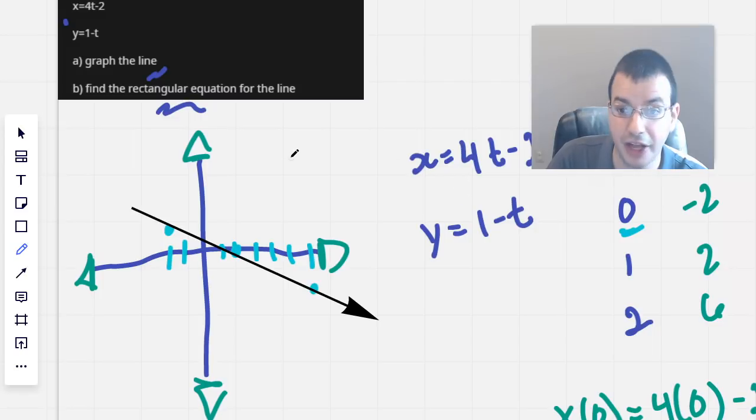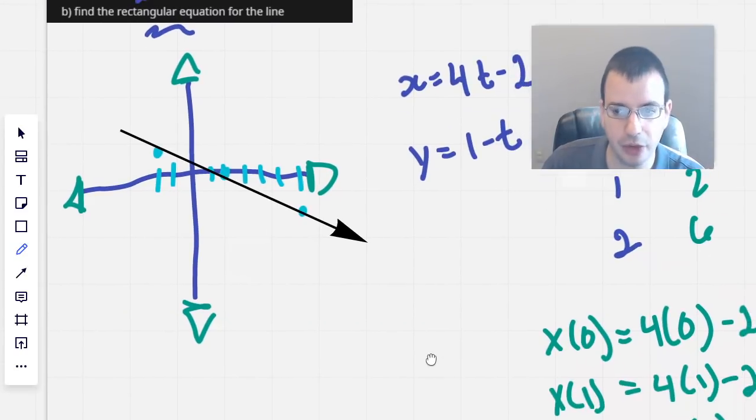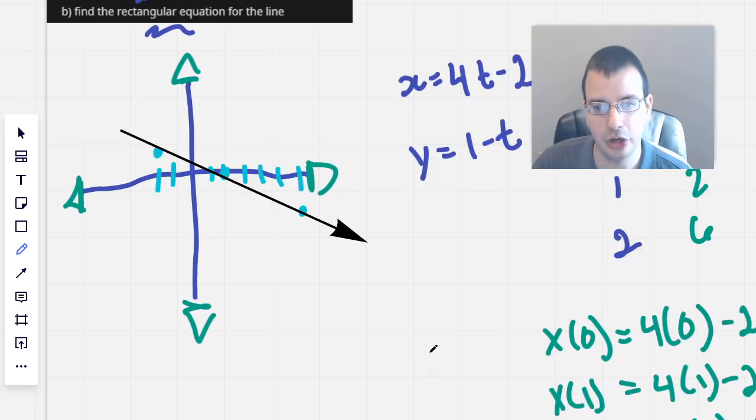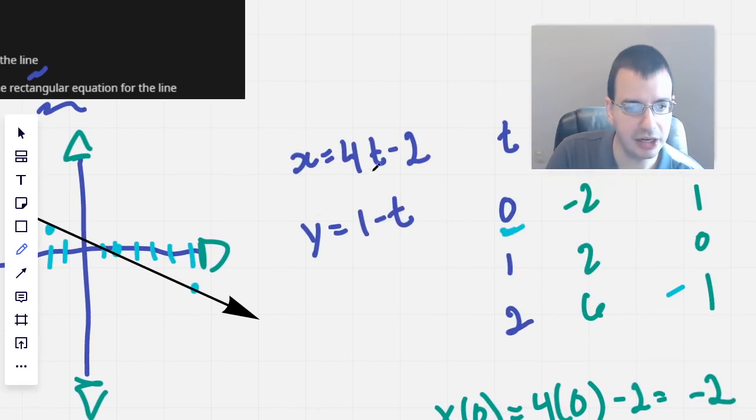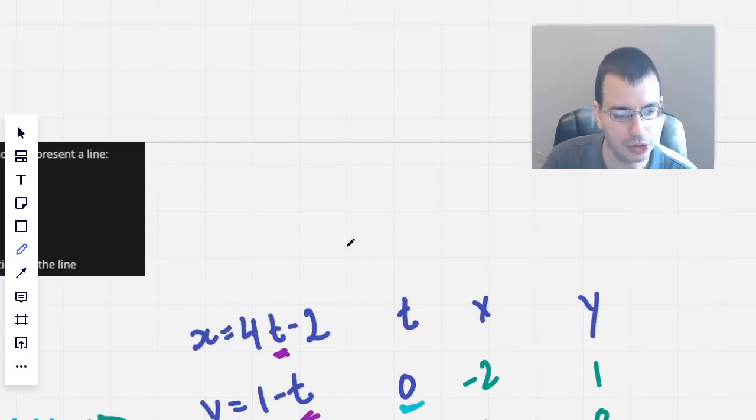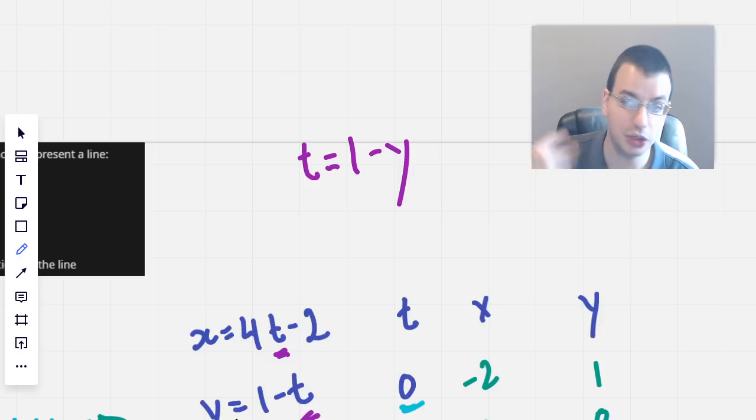The next part of the question is find the rectangular equation for the line. I'm going to assume that they want the line in y-intercept form. This t is sometimes referred to as a dummy variable because it's not even needed. First thing I'm going to do is solve for t. I'm going to start with this equation because it looks easiest.